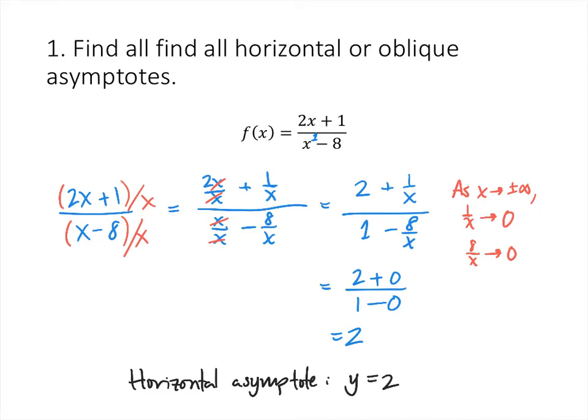That means that if we were to graph this rational function, on the ends, as x gets bigger and bigger in either the positive or negative direction, this function is going to look very much like the horizontal line y equals 2.